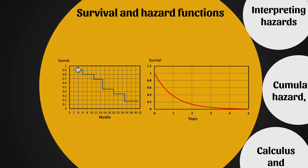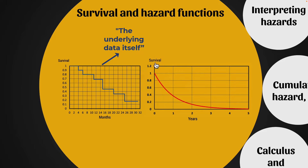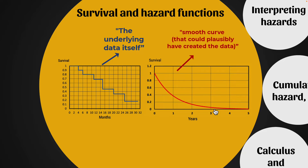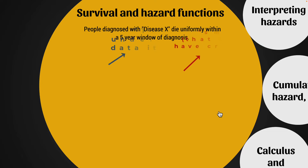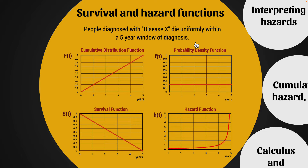Before diving into those four functions, let's remember from the previous video — we've already seen a survival curve. It looks a bit more like a staircase than a curve, but that is what might be called a survival curve from a Kaplan-Meier estimator. In this video, we'll find ways of creating a survival function that is a smooth curve and better reflects the true nature of survival as time progresses. We'll start with a very simple example.